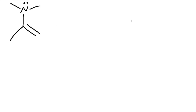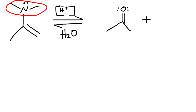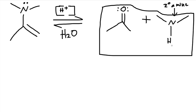We saw the reaction going forward. Now let's go backwards because it's a reversible reaction. Starting with the product in acidic conditions using water — we have to use water for going backwards. On one side we have a double bond connected to a hydrogen, and the other part is the nitrogen connected to two carbons — a secondary amine with a lone pair.